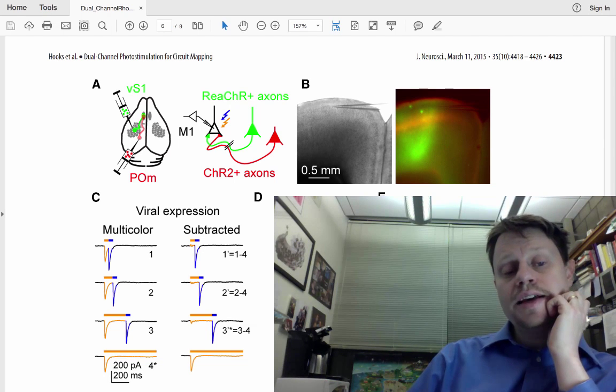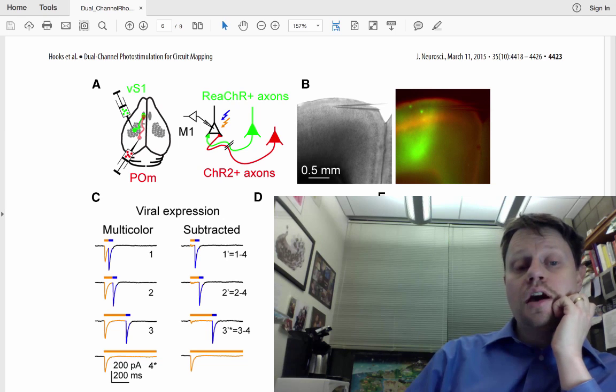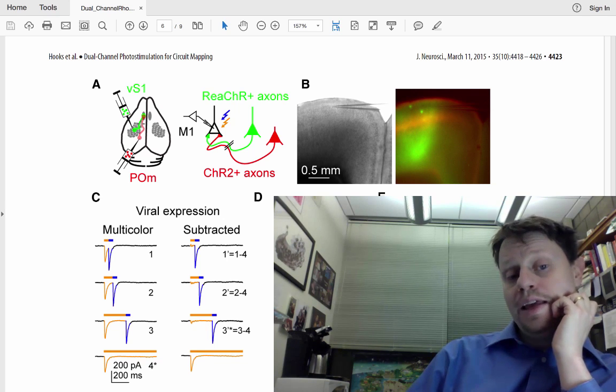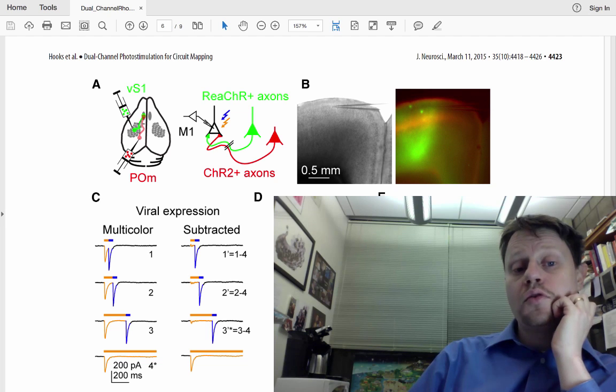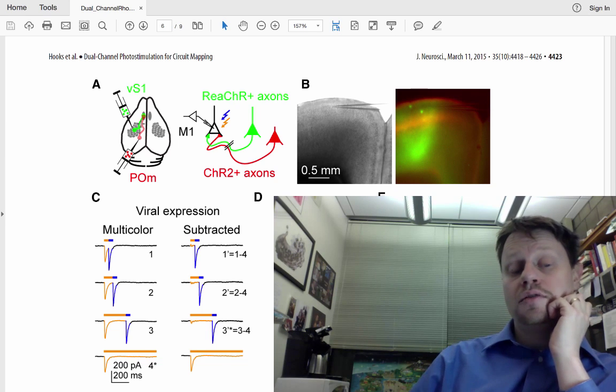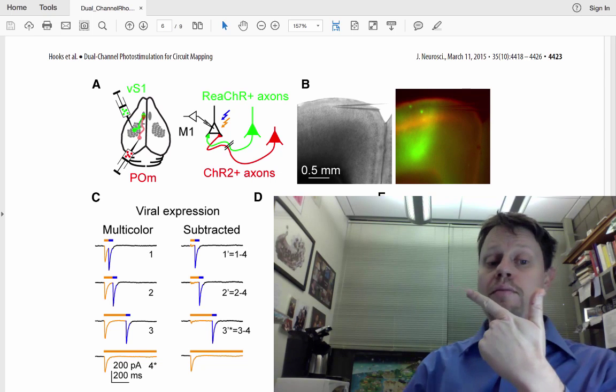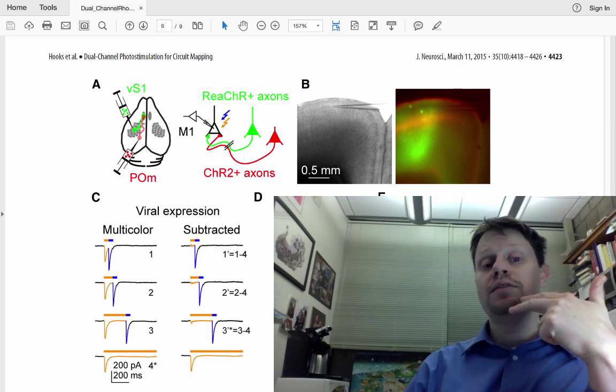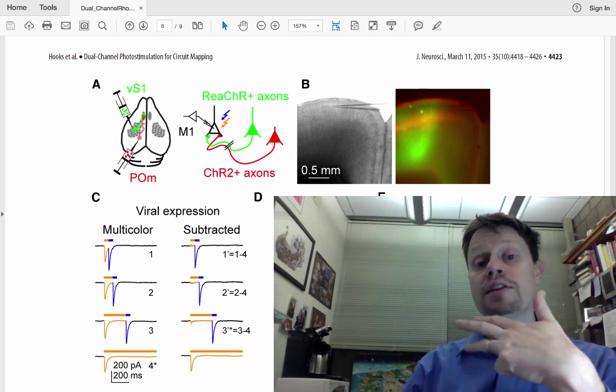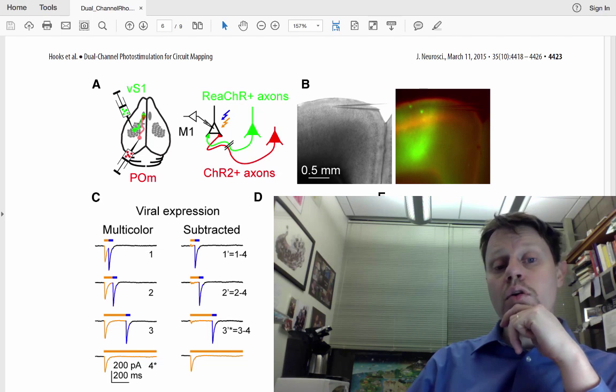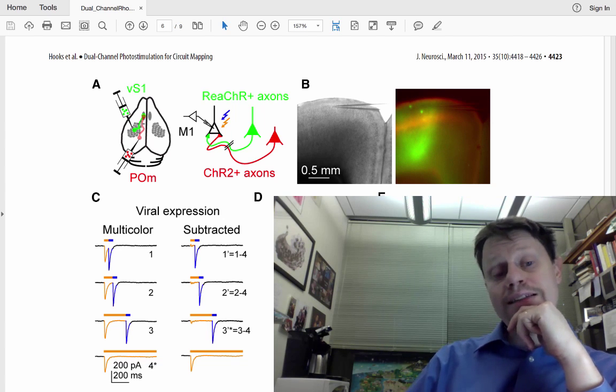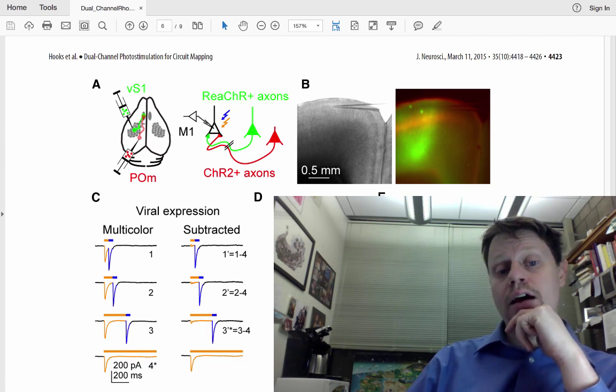And so in order to test that, you might identify and label motor cortex neurons into four different subclasses. Those that receive input just from somatosensory cortex, those that receive input just from POM of the thalamus, those that receive input from both, and those that receive input from neither. And then you might record from those motor neurons in an awake animal as the animal performs some sort of motor task and see whether you detect differences in the function of those neurons.